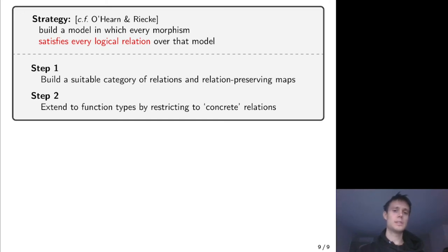How does this work? The idea is taken or inspired by that of O'Hearn and Riecke, which in turn takes inspiration from models of impredicative polymorphism. So we build a model in which every morphism satisfies every logical relation, which we might think of as every single predicate over that model.